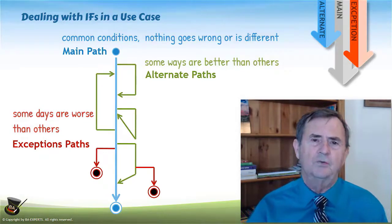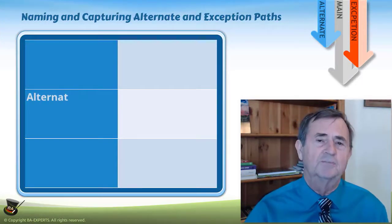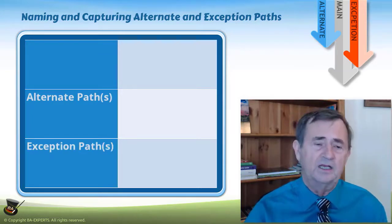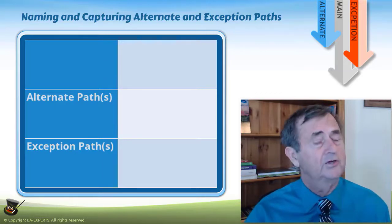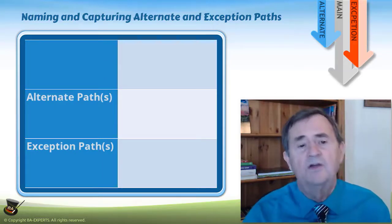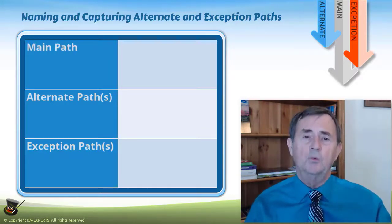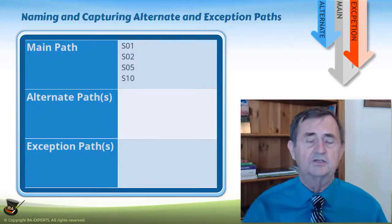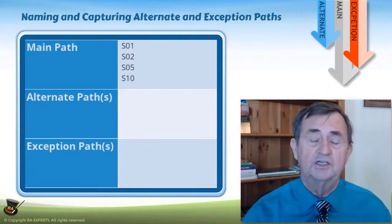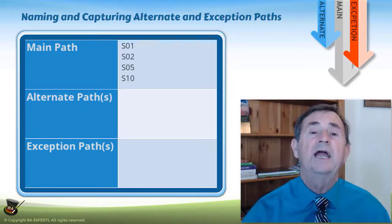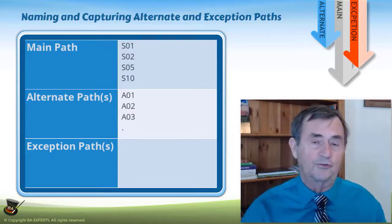There is a section in the use case specification for alternate paths and a section for exception paths. In the alternate path section, I'm going to name the path, because I can have multiple alternate paths out of one use case. My naming convention is based on the fact that my standard path has numbered steps: S01, S02, S05, S10, and so on. At the alternate level, I name each alternative path with an identifier starting with the letter A — A01, A02, A03, and so on.